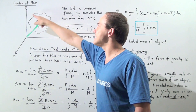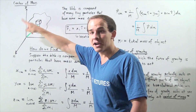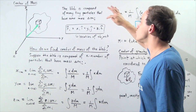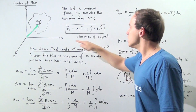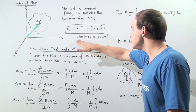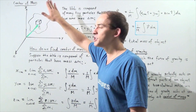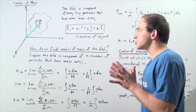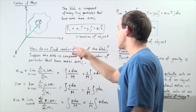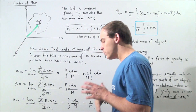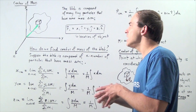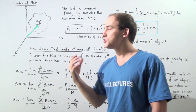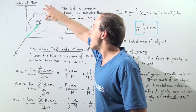Notice that because this is a three-dimensional object, that means it has an x component, a y component, as well as a z component. So this vector is the location of the center of mass of this particular tiny square particle. So how exactly do we find the center of mass of the entire blob? We basically have to find the center of mass of all of the tiny square particles that compose our blob.